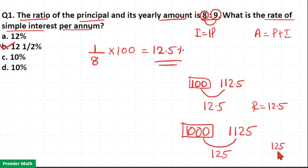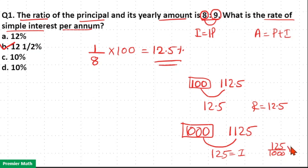This 125 rupees is the interest. This interest of 125 rupees I got from the initial amount of 1000 rupees. If I convert it into percentage — the zeros cancel — 12.5 is the rate. So option B is your answer.